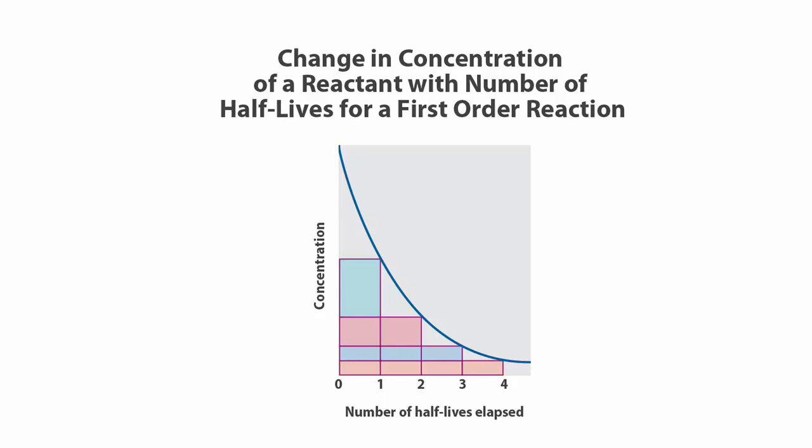Regardless of the order of a reaction, reactions tend to go faster as the temperature is increased. Arrhenius described this temperature dependence on the rate constant in the following fashion, where A is a large constant that is essentially temperature-independent, and Eₐ is the activation energy.